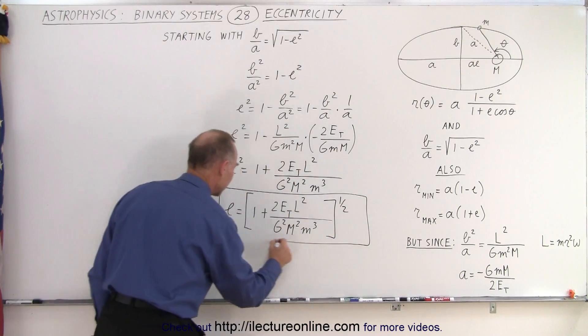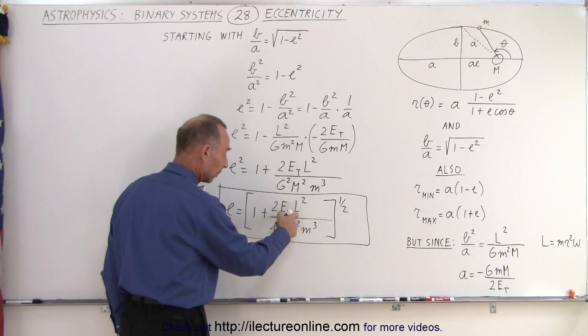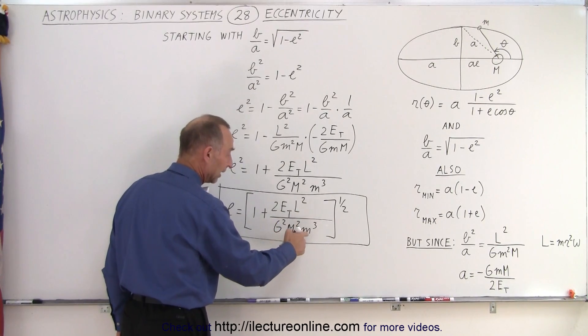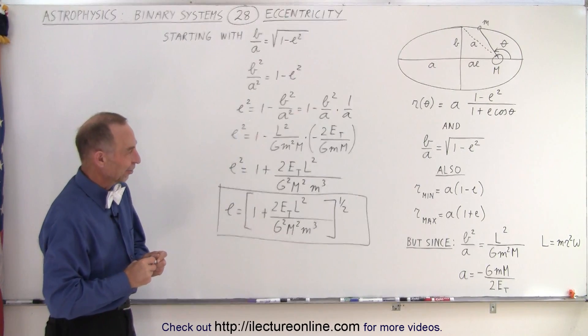And so now you can see that you can also calculate the eccentricity of the orbit by knowing the total energy of the planet, the angular momentum of the planet, the mass of the sun, and the mass of the planet. And so here's another way of looking at eccentricity.